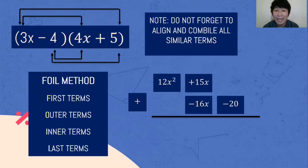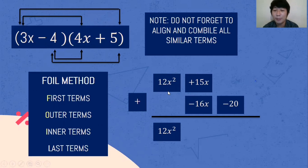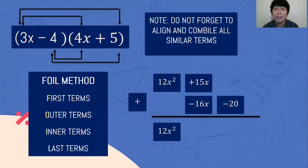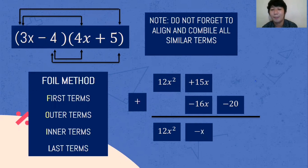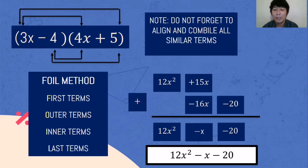Let's finalize the answer. Do not forget to align and combine all similar terms. We bring down 12x squared. Then 15x plus negative 16x — we have different signs, so we subtract and follow the sign of the higher absolute value: 15x plus negative 16x is negative x. Then bring down negative 20. So the final answer is 12x squared minus x minus 20.